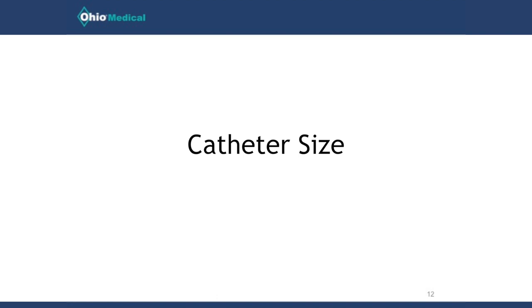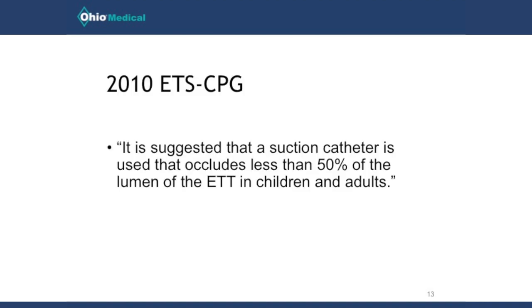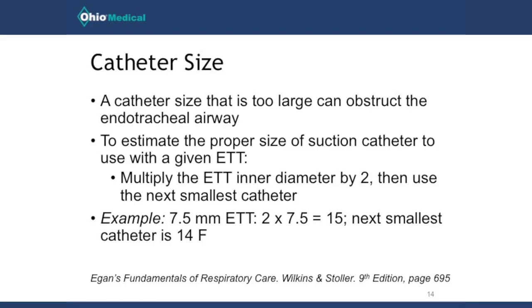Another important point is to consider the catheter size relative to the endotracheal or tracheostomy tube in place. The general guideline is to use a catheter that occludes less than 50% of the inner lumen of the endotracheal tube. A good rule is to take the inner diameter of the endotracheal tube, multiply it by two, and use the next smallest size catheter. For example, for a 7.5 inner diameter tube, multiply by two to get 15, then use the next smallest size — a 14 French catheter would be acceptable. For a 7.0 tube, a 14 French would be too large, so you would use a 12 French.